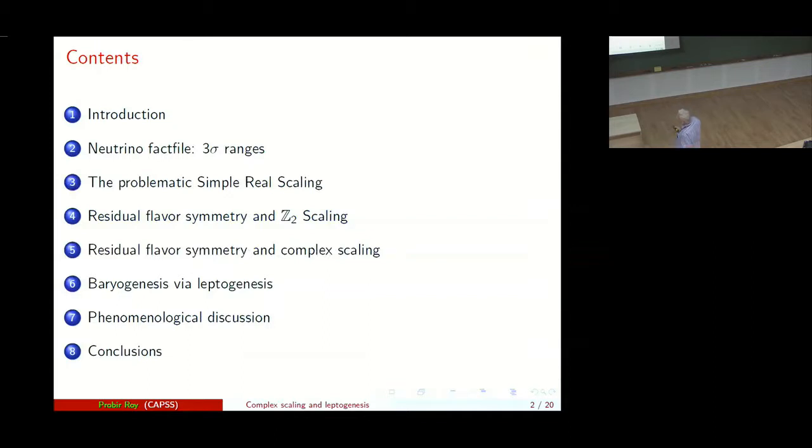So I will first introduce the subject and I will open the neutrino fact file and talk about data in three sigma ranges. I will then mention what the problem is with simple real scaling which was proposed by Lavoura and Mahapatra and Rohde Johan, and then I will bring out an aspect of this which is a residual Z2 scaling. And then I will explain how from residual flavor symmetry you can go to complex scaling. It solves all the problems that you have with simple real. And then I will talk about baryogenesis via leptogenesis and then give some phenomenological discussion and come to the conclusion.